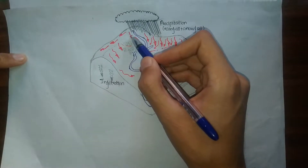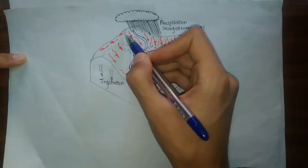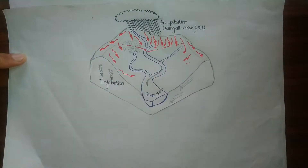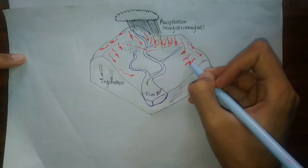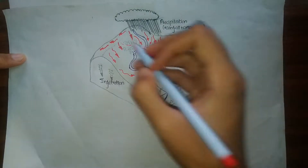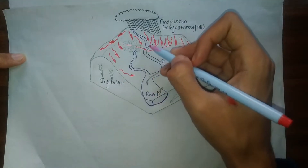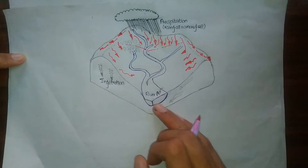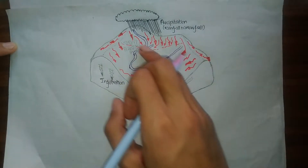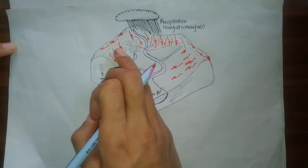As you can see here on this land, some of the rain water, denoted by the red lines, is flowing in one direction while some of the rainfall is flowing in another direction. All this rain water flowing in this direction is getting deposited in this river, which we have named River A, denoted by the blue line.